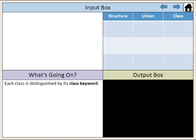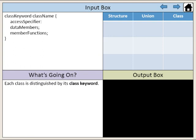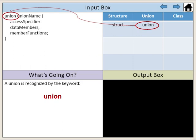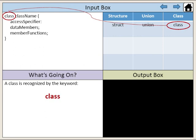Each class is distinguished by its class keyword. A structure is recognized by the keyword struct. A union is recognized by the keyword union. A class is recognized by the keyword class.